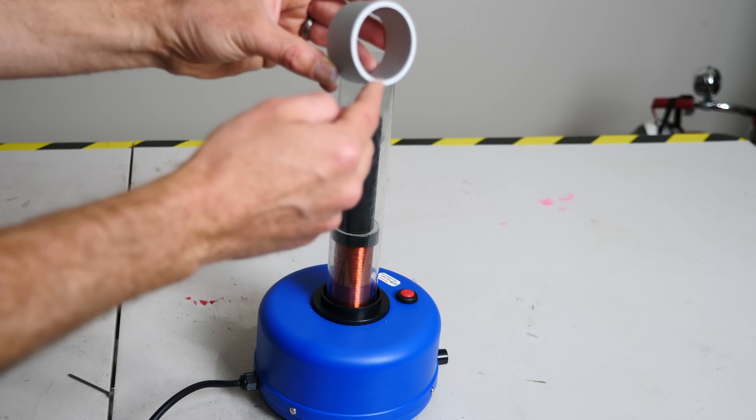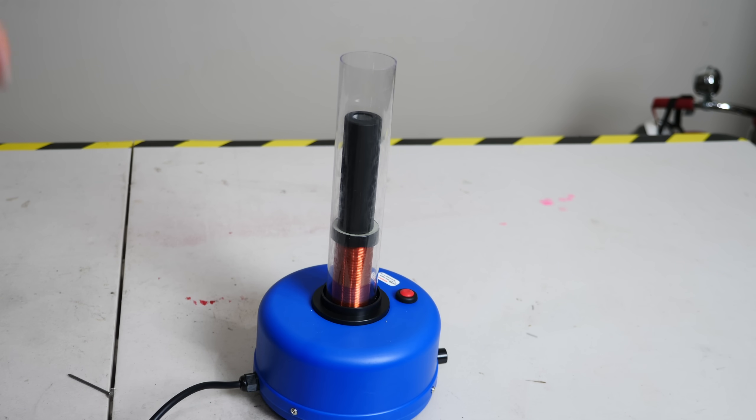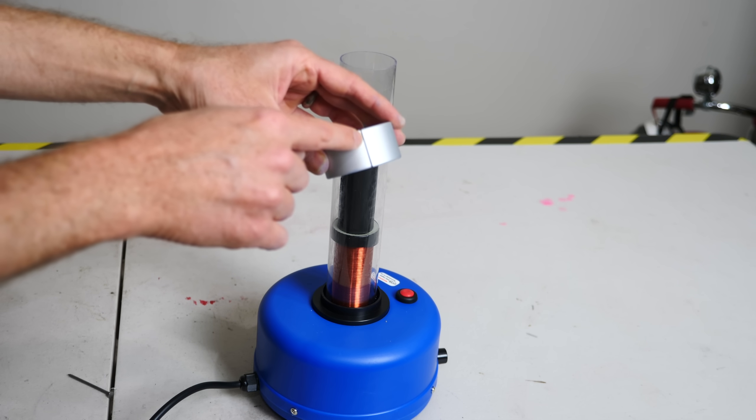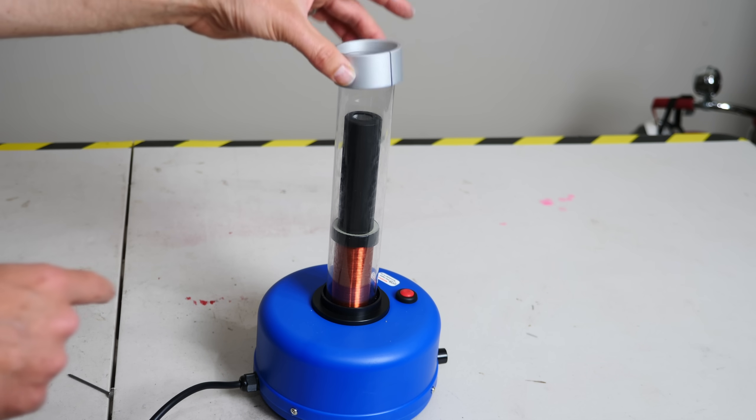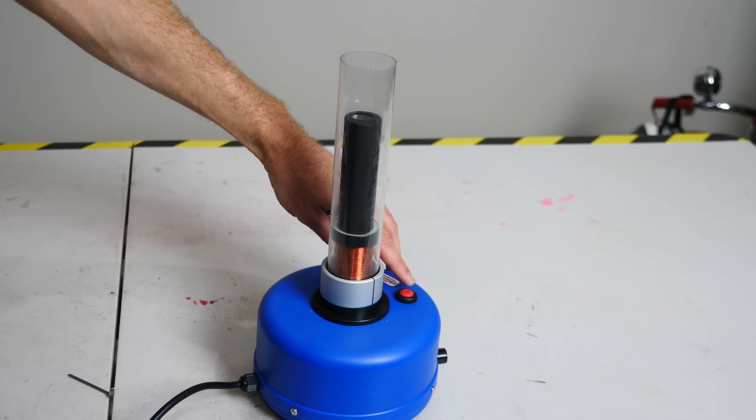For example, here's a complete ring. And here's a ring with a slit in it. So it's not a complete circuit now. You can see nothing happens.